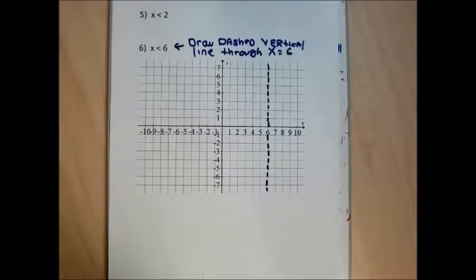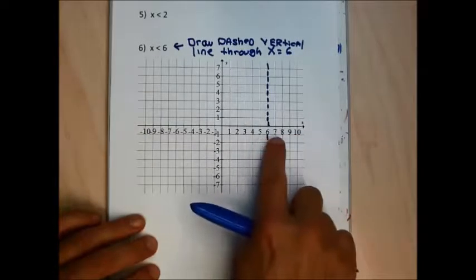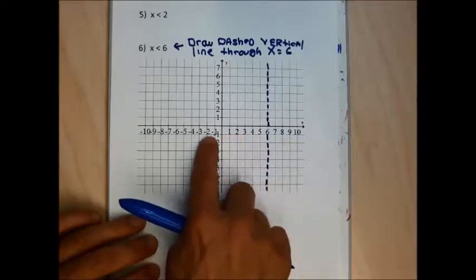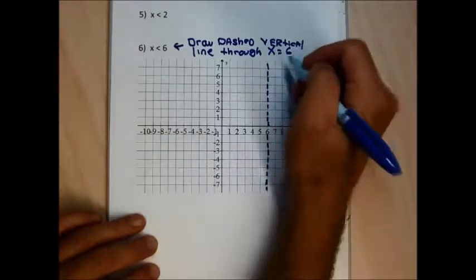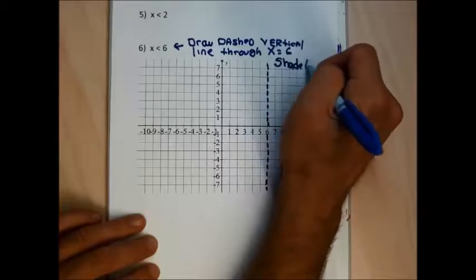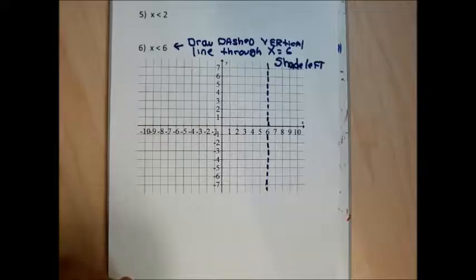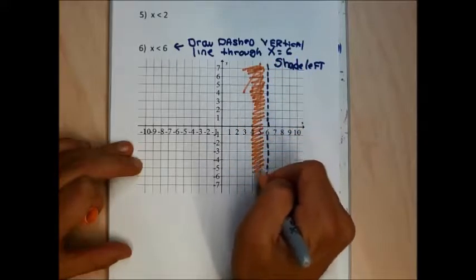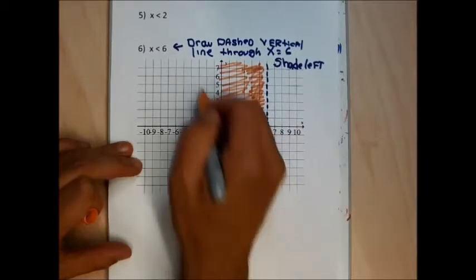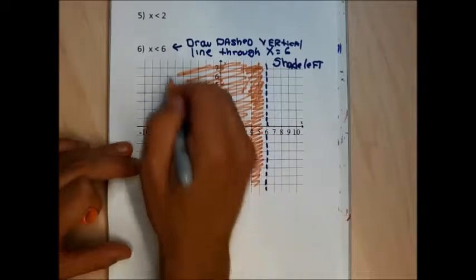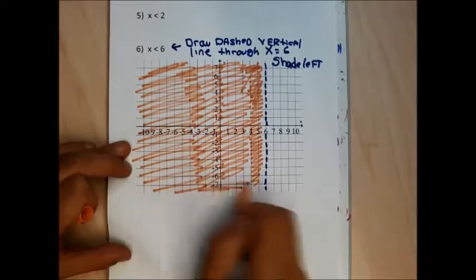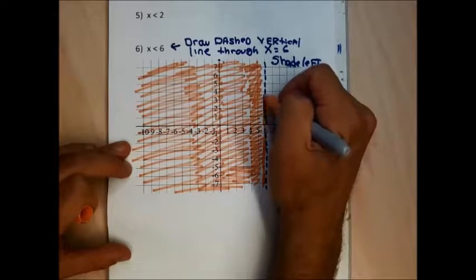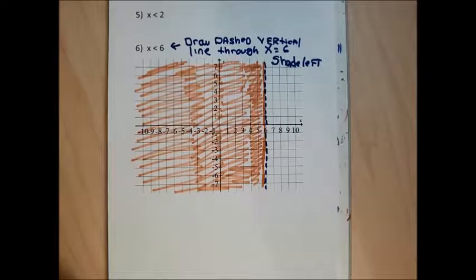Now I need to identify all the points with x-coordinates less than 6. If I go to the right of this dashed line, x-coordinates are 7, 8, 9, 10 — they're bigger than 6. If I go to the left, I get 5, 4, 3, 2, 1, negative 1, negative 2, negative 3, negative 4 — x-coordinates less than 6. So I'm going to shade to the left, covering every point with an x-coordinate less than 6, right up to the dashed line.